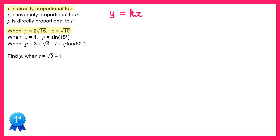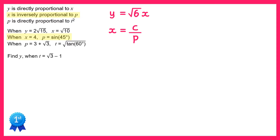So y equals root 6 lots of x. We'll now move on to the second statement — x is inversely proportional to p, and we're given some values for x and p. So x would equal some constant, which we'll call c this time, divided by p. Let's substitute in the values: replace x with 4 and p with sine 45.